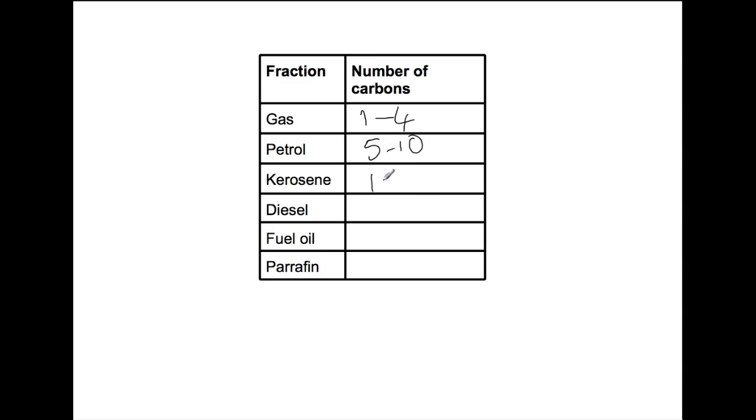In the kerosene range we have 10 to 16 carbons. Within the diesel range there are 14 to 20, so these overlap. Within the fuel oil range we have 20 to 70, and in the paraffin range we have carbon chains of 70 plus.